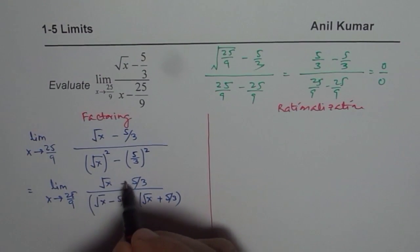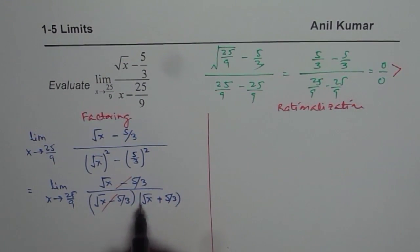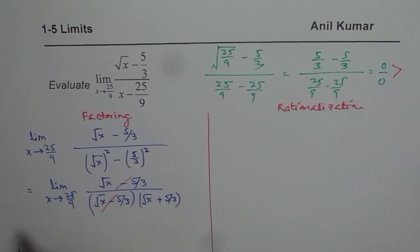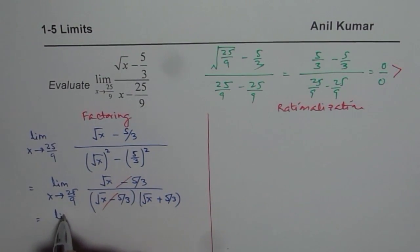So we have a common factor that caused 0 over 0, right? It cancels. So we get limit x approaches 25 over 9.